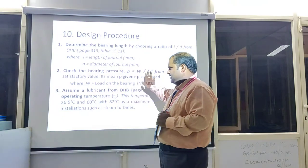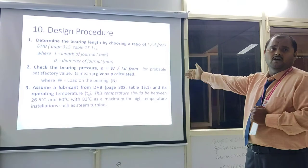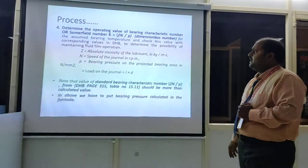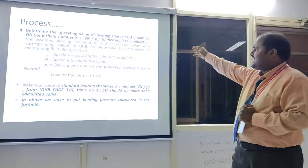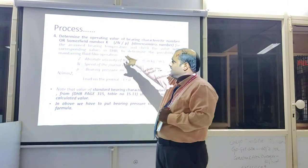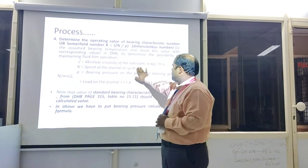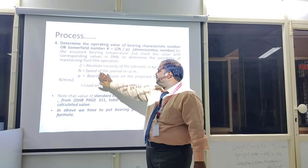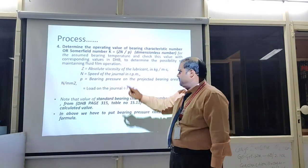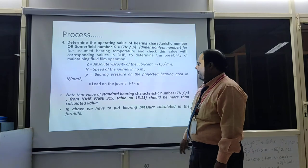Step 3 — assume the lubricant from the data handbook. Step 4 — determine the operating value of the bearing characteristic number or Sommerfeld number (a dimensionless number): K = ZN/P, where Z is the absolute viscosity of the lubricant in kPa·s, N is the speed of the journal in RPM, and P is the bearing pressure on the projected bearing area in N/m², equal to load on the journal divided by L × D.